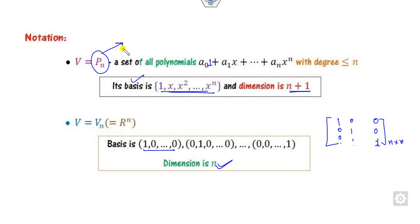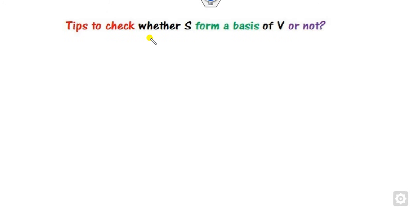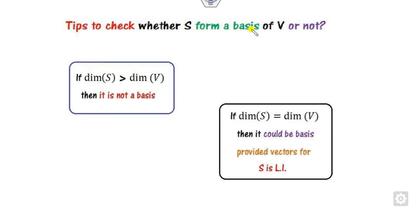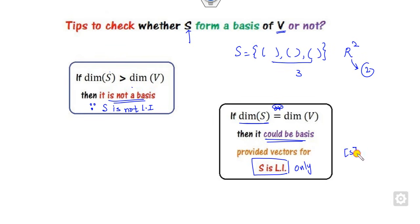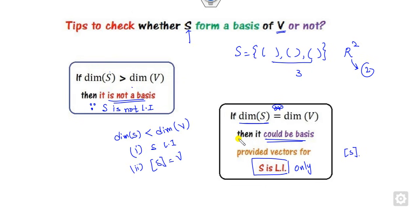Here is a useful shortcut for proving whether S is a basis. If the number of elements in S is greater than the dimension of V, then S is not a basis because S cannot be linearly independent. For example, if S has 3 vectors in R², which has dimension 2, then S is not linearly independent and hence not a basis. If the number of elements in S equals dim(V), you only need to prove S is linearly independent — there is no need to separately prove the span condition. If the number of elements is less than dim(V), you must prove both linear independence and span.